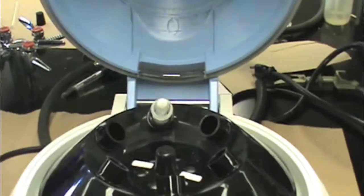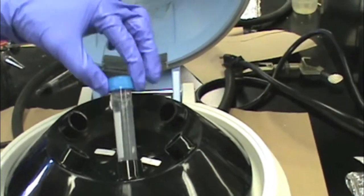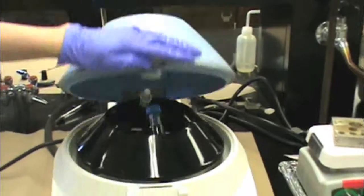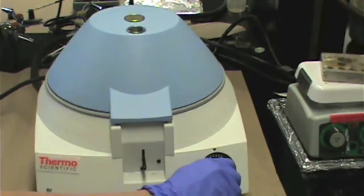Then place it into the centrifuge and put your balance opposite your Kreg tube insert. Close the centrifuge and run it for several minutes.